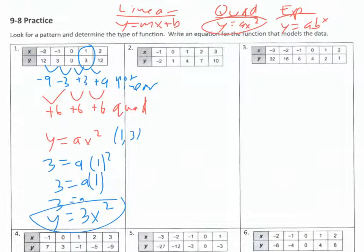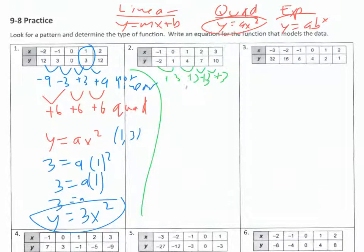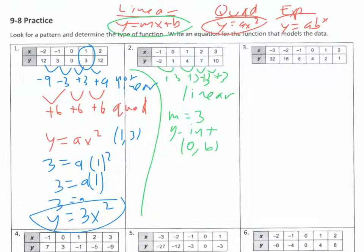For number two, checking the differences I get plus three, plus three, plus three, plus three — a consistent pattern — so it's linear. Using y equals mx plus b, the slope m is three. The y-intercept is the y value when x is zero, which is one. So the equation is y equals three x plus one.